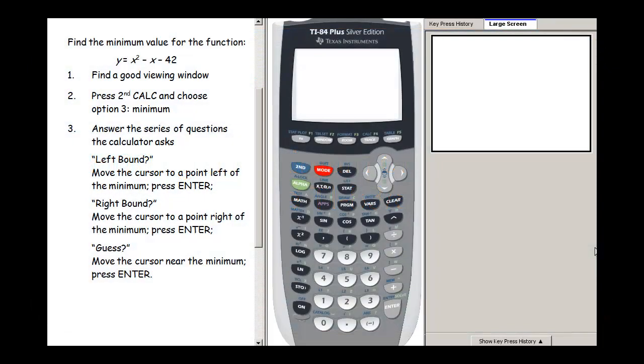Welcome to this video on using the TI-83 or 84 graphing calculator to find the minimum or maximum value of a function. What I want to do is find the minimum value for the function y equals x squared minus x minus 42.